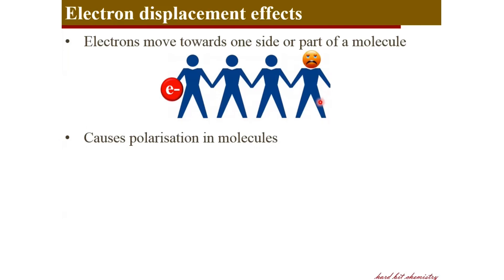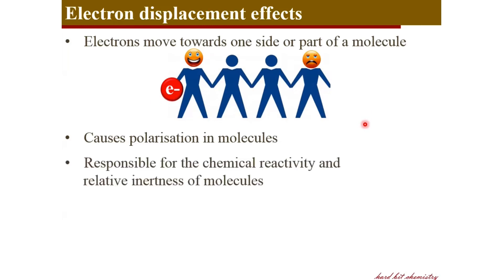For example, the atom which originally possesses an electron pair becomes positively charged because it loses the electron pair. On the other hand, the atom which newly possesses this electron pair becomes negatively charged. Thus, a kind of polarization is created in the molecule. Such electron displacements are responsible for chemical reactivity and certain inertness of molecules.